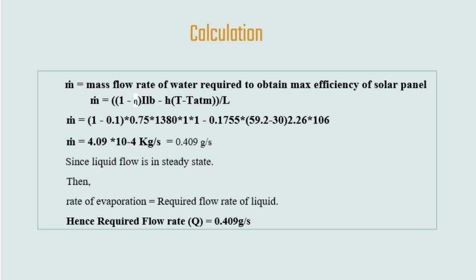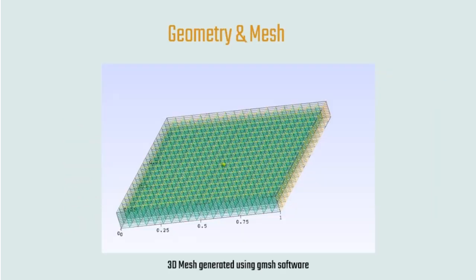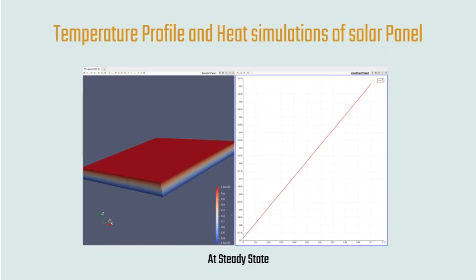After substituting all values into the expression, the mass flow rate comes out to approximately 0.409 grams per second. This is the mass flow rate that evaporates every second; since we assumed steady-state flow, the rate of evaporation equals the required flow rate to avoid water accumulation or loss. The mesh representing the solar panel was generated using Gmesh software. The heat simulation profile was obtained using OpenFOAM, with the top surface boundary condition set as a fixed gradient.